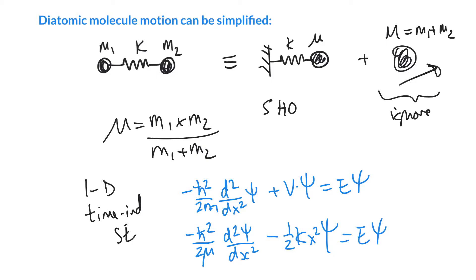We can rewrite that as h hat psi equals e psi. We can take these terms that I'm circling in green, and these represent our Hamiltonian operator, and it operates on our wave function.